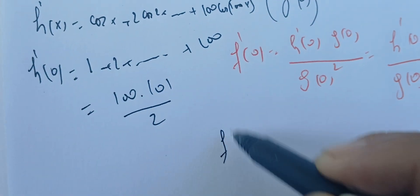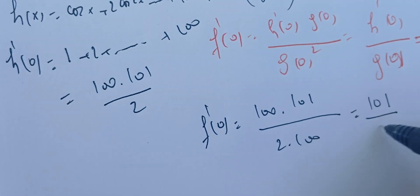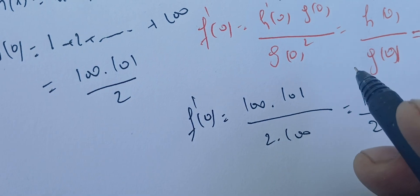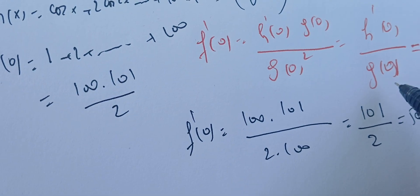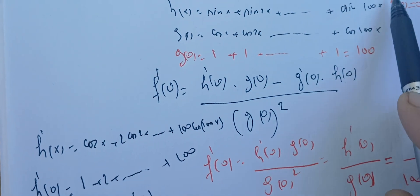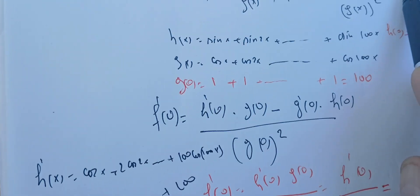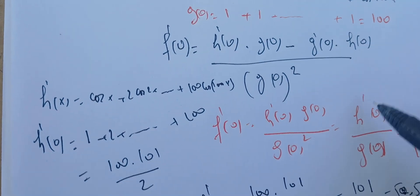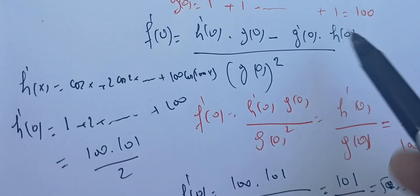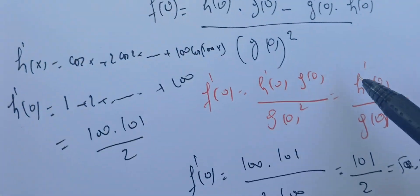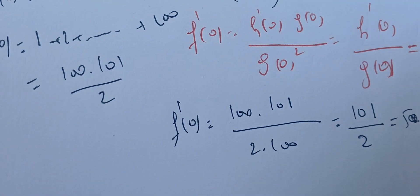Plugging everything in: f prime of 0 equals (100 × 101 / 2) divided by 100, which simplifies to 101 over 2 = 50.5. The key insight was that H(0) = 0 eliminates a term, leaving us with H prime of 0 over G(0), giving a final answer of 50.5.